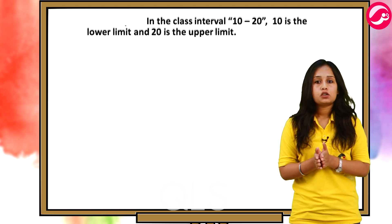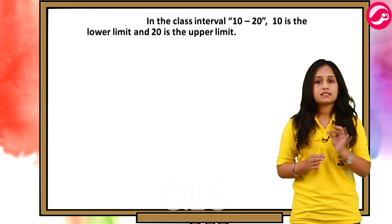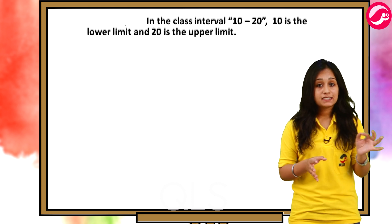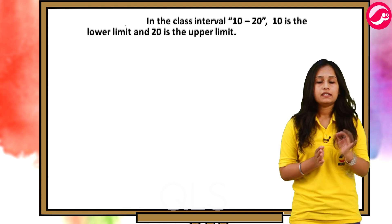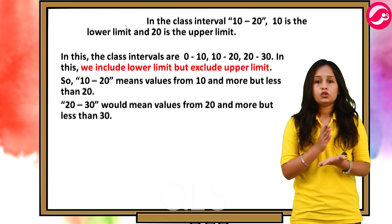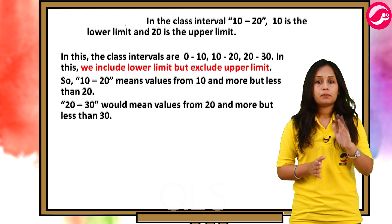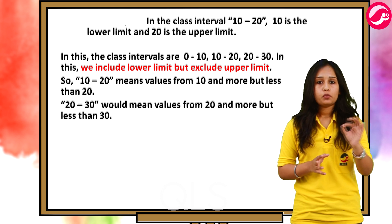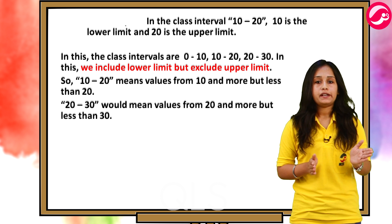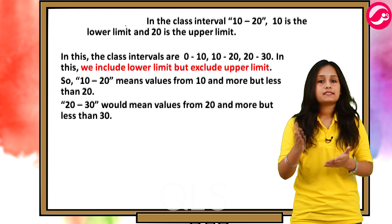For example, in the class interval 10 to 20, 10 is the lower limit and 20 is the upper limit. Now, one more thing is that this table is expressed in the exclusive form which means that in this, the class intervals are 0 to 20, 10 to 20, 20 to 30. In this, we include lower limit but exclude upper limit. So, 10 to 20 means values from 10 and more but less than 20. 20 to 30 would mean values from 20 and more but less than 30.